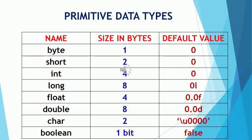Then we have float, which is used for storing decimal numbers, generally small decimal numbers, and it occupies four bytes in memory. Then we have double, which is also used for storing decimal numbers but large decimal numbers, and it occupies eight bytes in memory. Then we have char, which occupies two bytes in memory. And finally, boolean, which occupies one byte in memory and its default value is false.